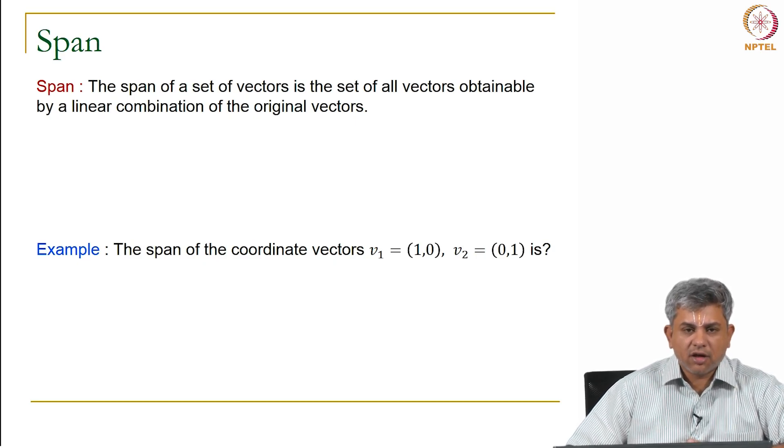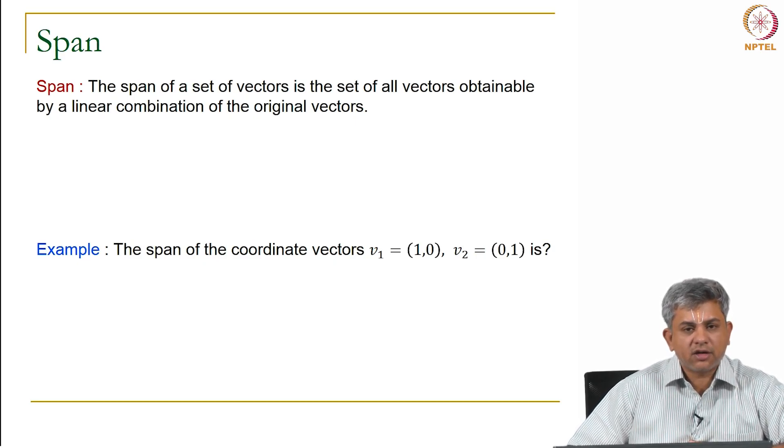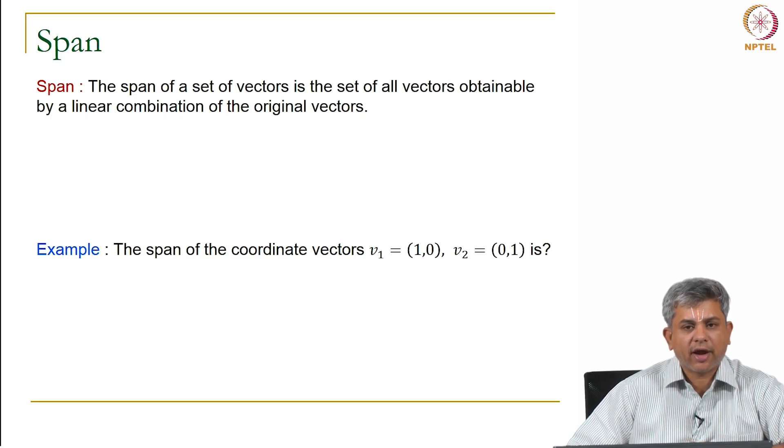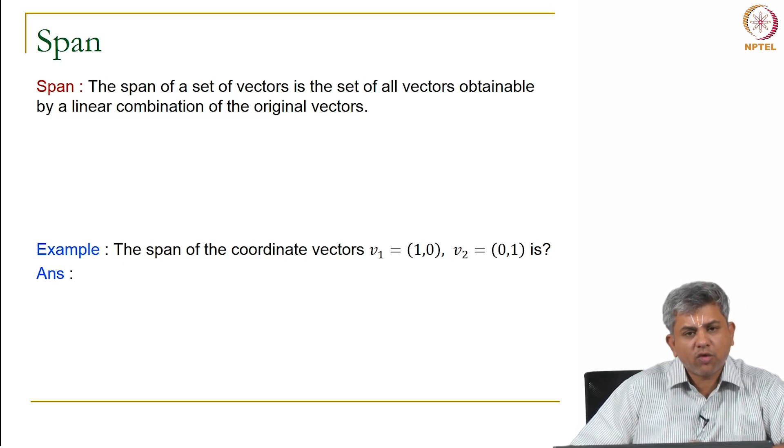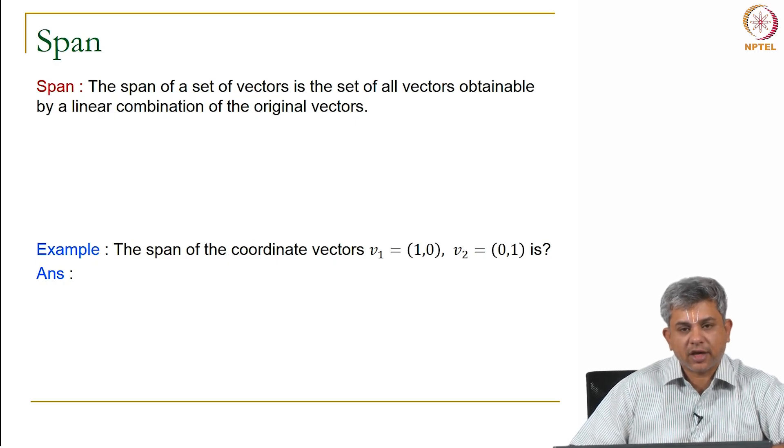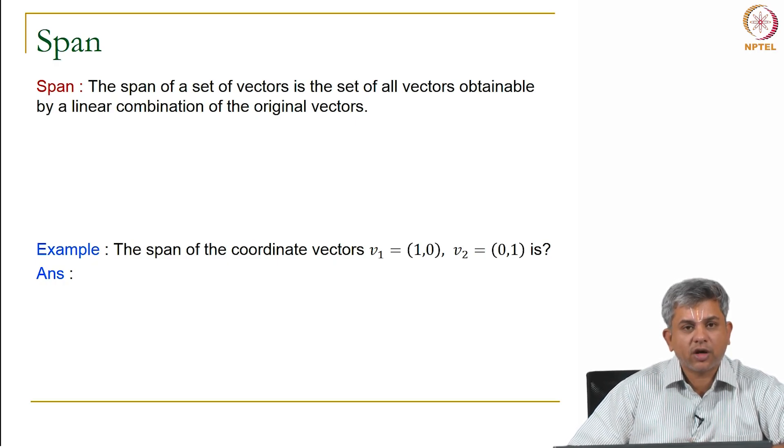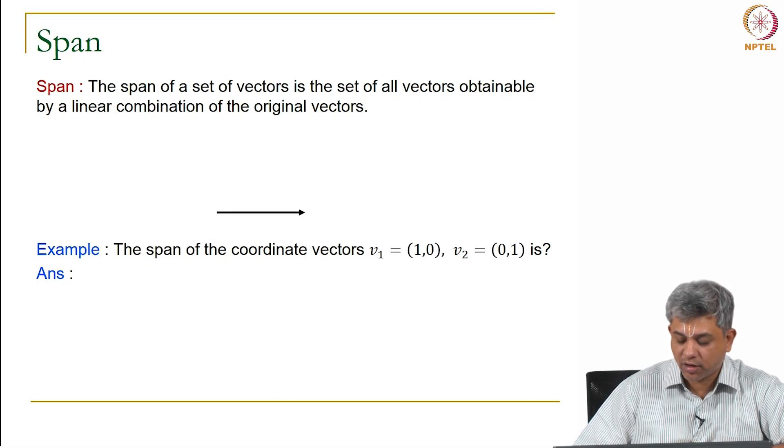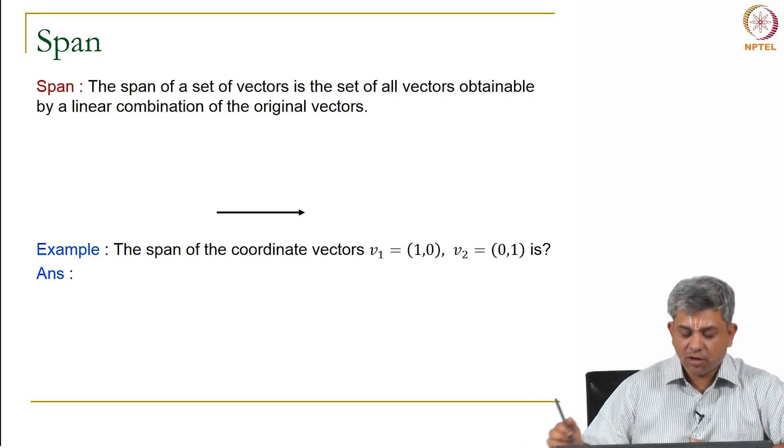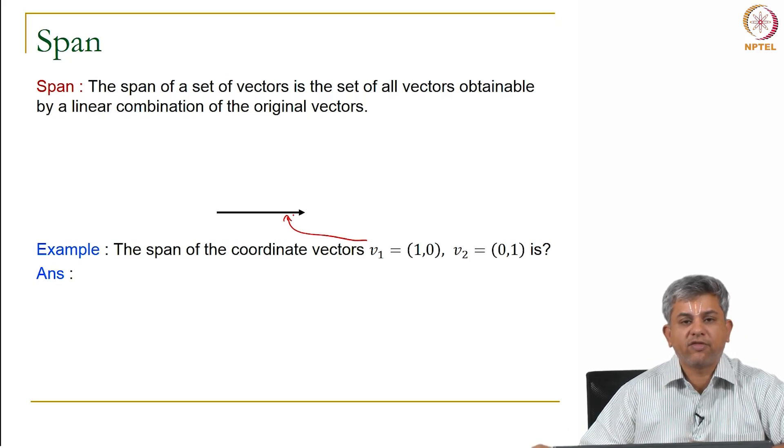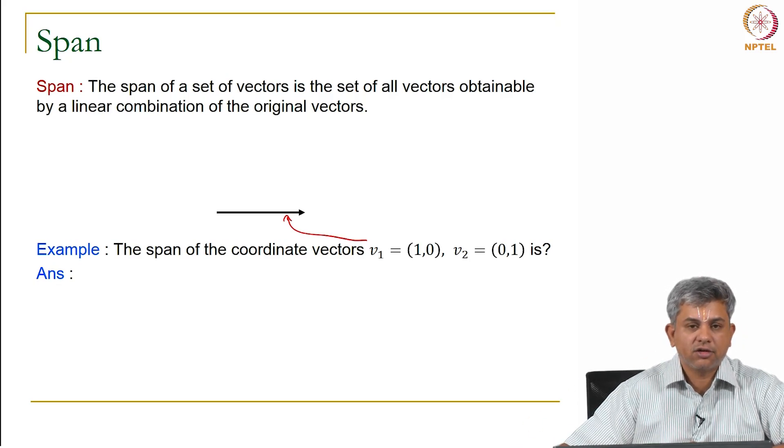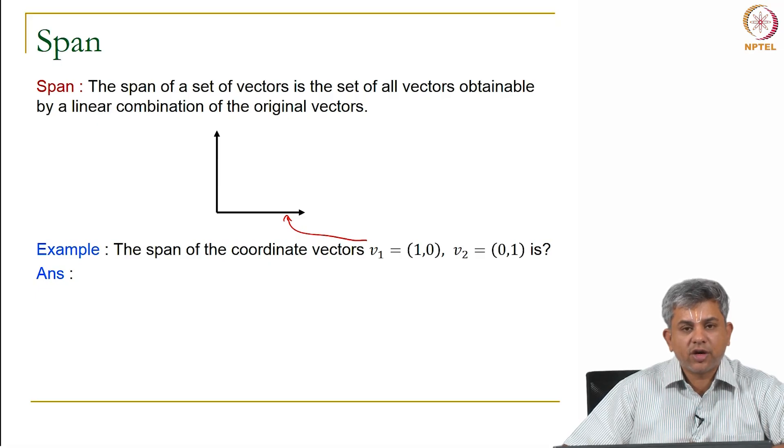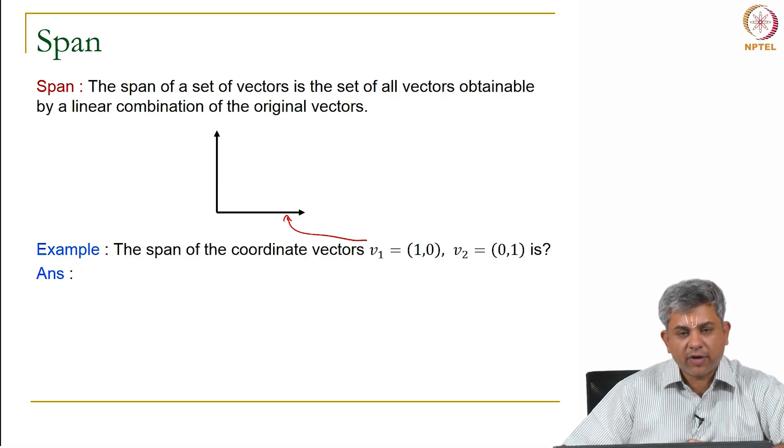Let's look at an example. Say we're looking at two vectors: V1 is (1,0) and V2 is (0,1). What would be the span of this? Notice V1 is simply the unit vector in the x direction, and V2 is the unit vector in the y direction.